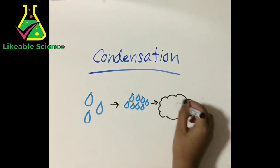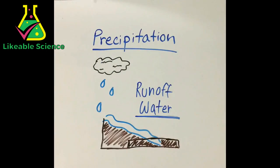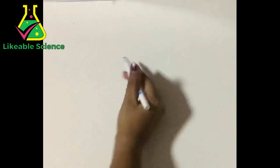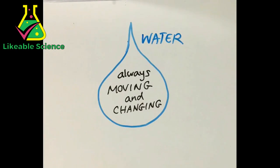Evaporation, condensation, runoff water from all the precipitation. Each stage of the water cycle is a station where water is always moving and changing.